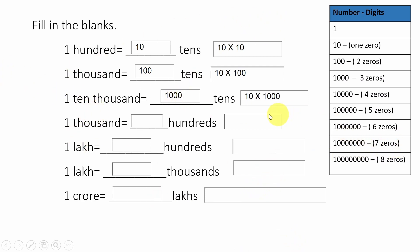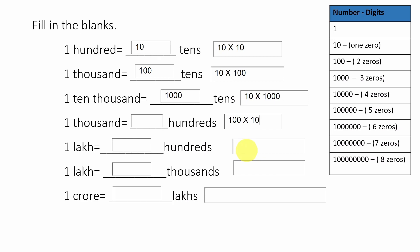Next: one thousand equals how many hundreds? This thousand should be written as a product of hundreds — hundred into what number? In thousand, how many zeros are there? Three. We have already written two zeros, so we need one more. The answer is ten. So one thousand equals ten hundreds.